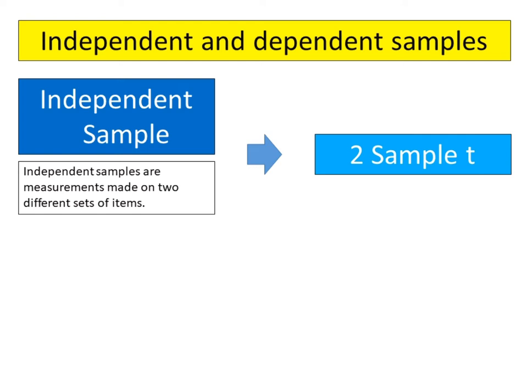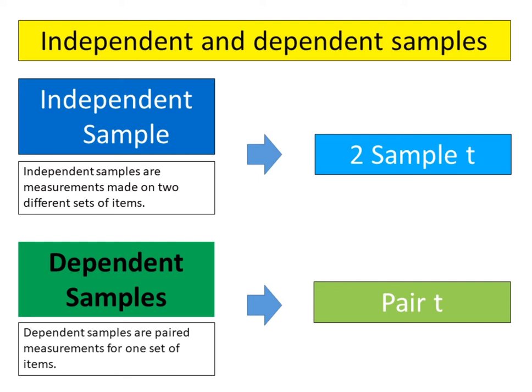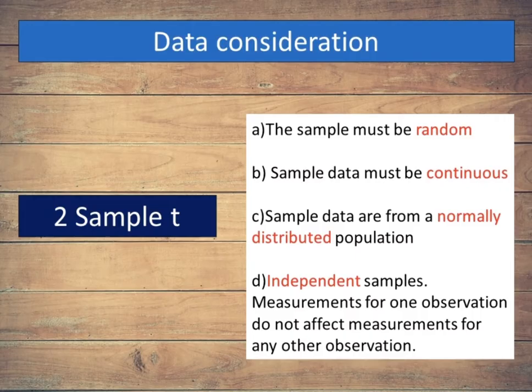Two-sample T test is used when the data of two samples are statistically independent, while the paired T test is used when data is in the form of dependent samples. To ensure that your results are valid, consider the following guidelines when you collect data, perform the analysis, and interpret your results.